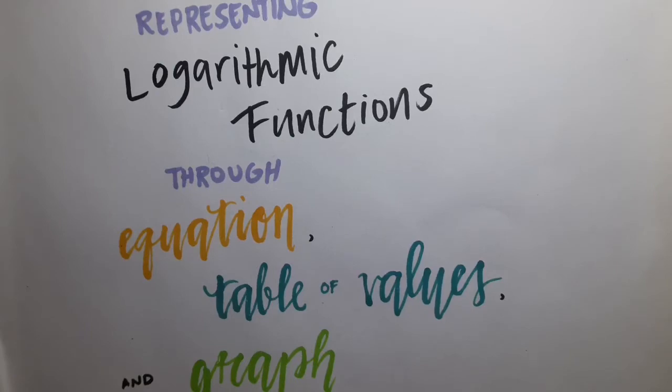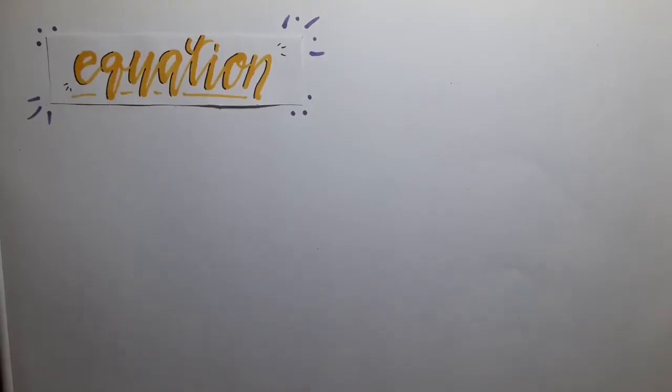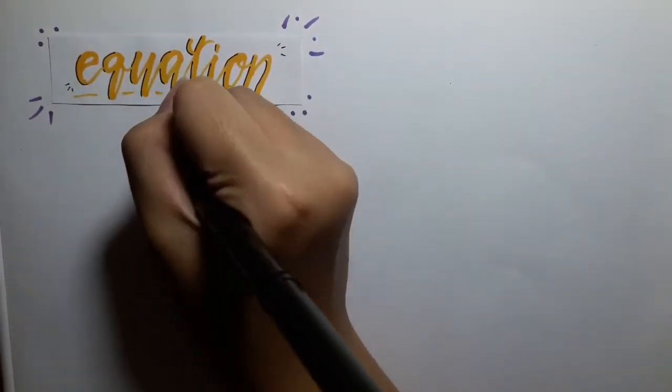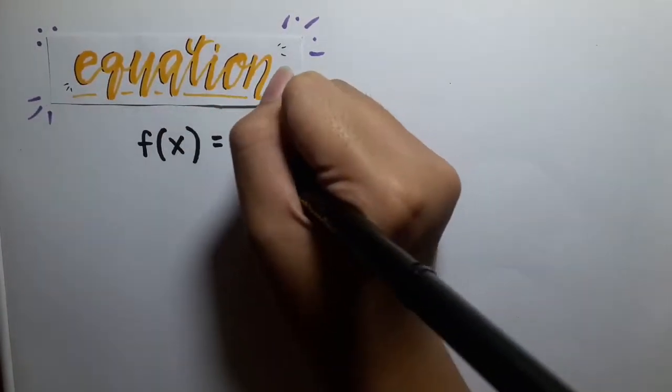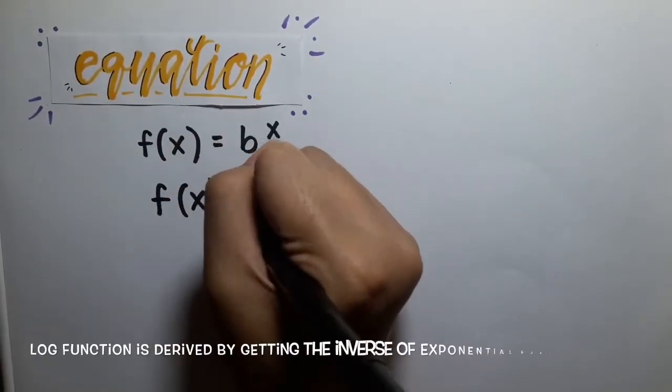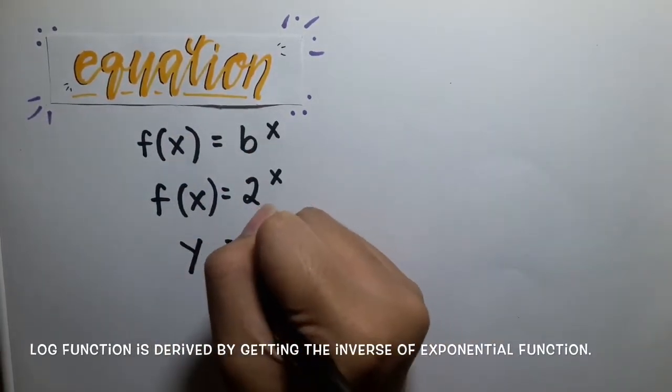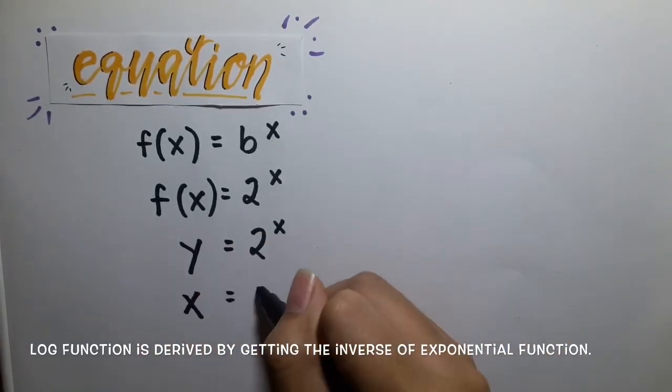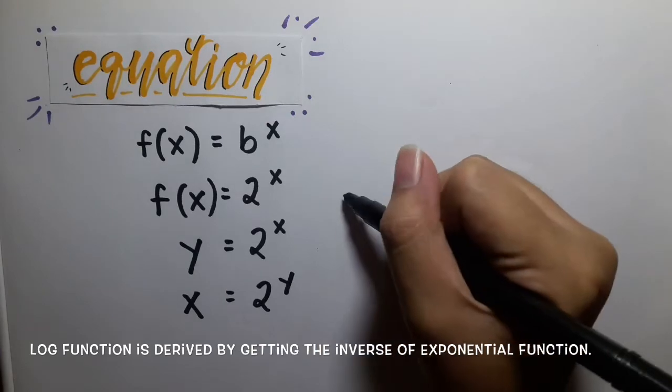Hi everyone! Let's learn how to represent logarithmic functions through equation, table of values, and graph. So let's proceed to the equation. We use the base of 2 to get the logarithmic function equation of y is equal to logarithm of x to the base of 2.